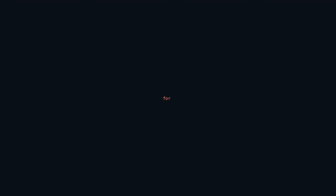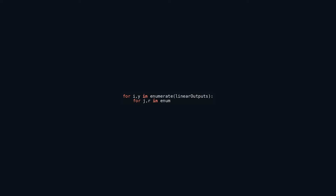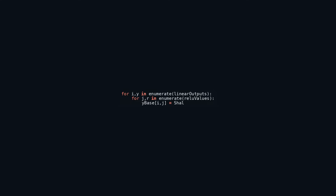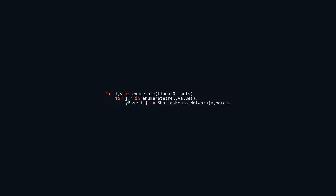Within this code snippet, there is a process that involves iterating through two lists — linear_outputs and relu_values — utilizing nested loops along with the enumerate function to maintain index tracking simultaneously. Through each iteration, the code invokes the shallow_neural_network function with the y value extracted from linear_outputs and other parameters, saving the outcome in the y_base array based on corresponding index positions. The primary objective is to employ the shallow_neural_network function selectively on distinct pairs of entries from the linear_outputs and relu_values collections, enabling examination and storage of resultant values in y_base for subsequent analysis and computations.